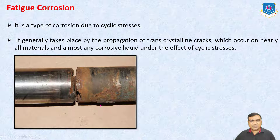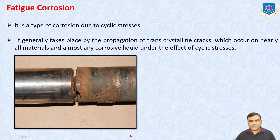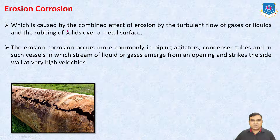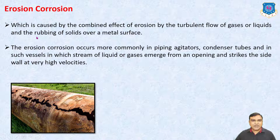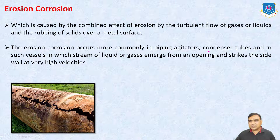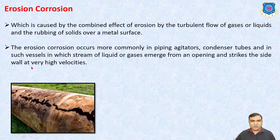Generally, shafts and rotating parts where continuously compressive and tensile stresses are developed experience fatigue, and due to that fatigue, corrosion takes place. Erosion Corrosion is caused by the combined effect of erosion by turbulent flow of gases or liquids and the rubbing of solids over a metal surface. Erosion corrosion occurs more commonly in piping, agitators, condenser tubes and vessels in which a stream of liquid or gases emerges from an opening and strikes the side wall at very high velocities. Generally it happens when liquids and gases are flowing through the pipes.